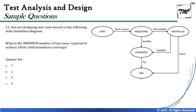The next question is number 23, related to state transition testing. You are designing test cases based on a state transition diagram for booking a hotel room. You start with a room request — if available, it is confirmed and you make payment, then it ends. If not available, it goes to a waiting list; when it becomes available it is confirmed and ends. From the waiting list, if not available for a given period, it is cancelled and ends. So there are three paths.